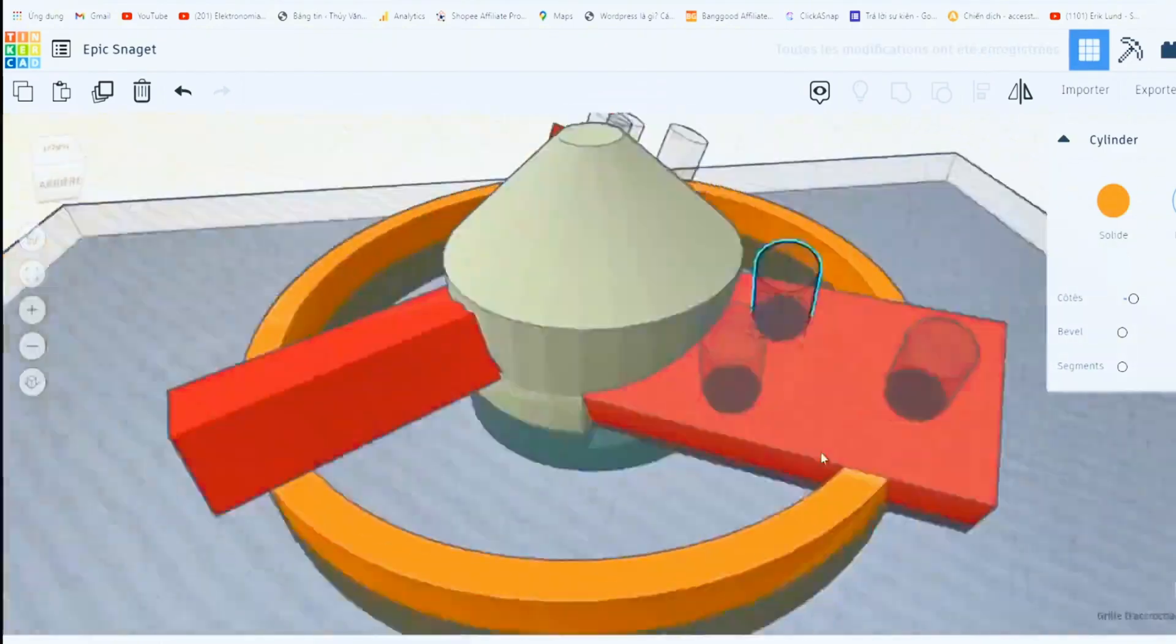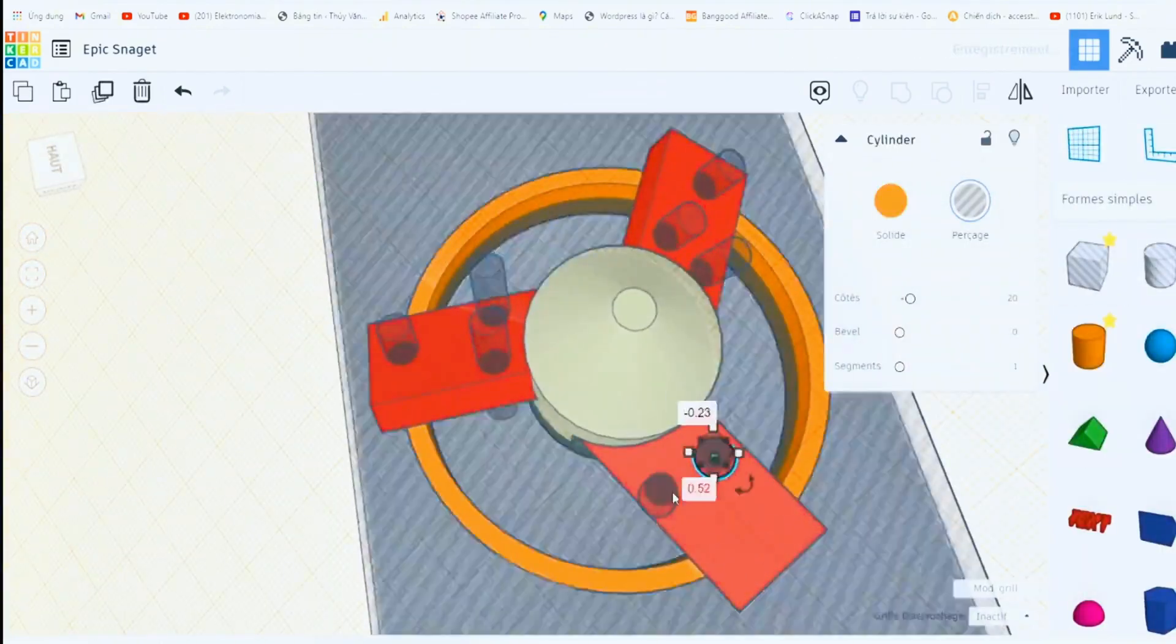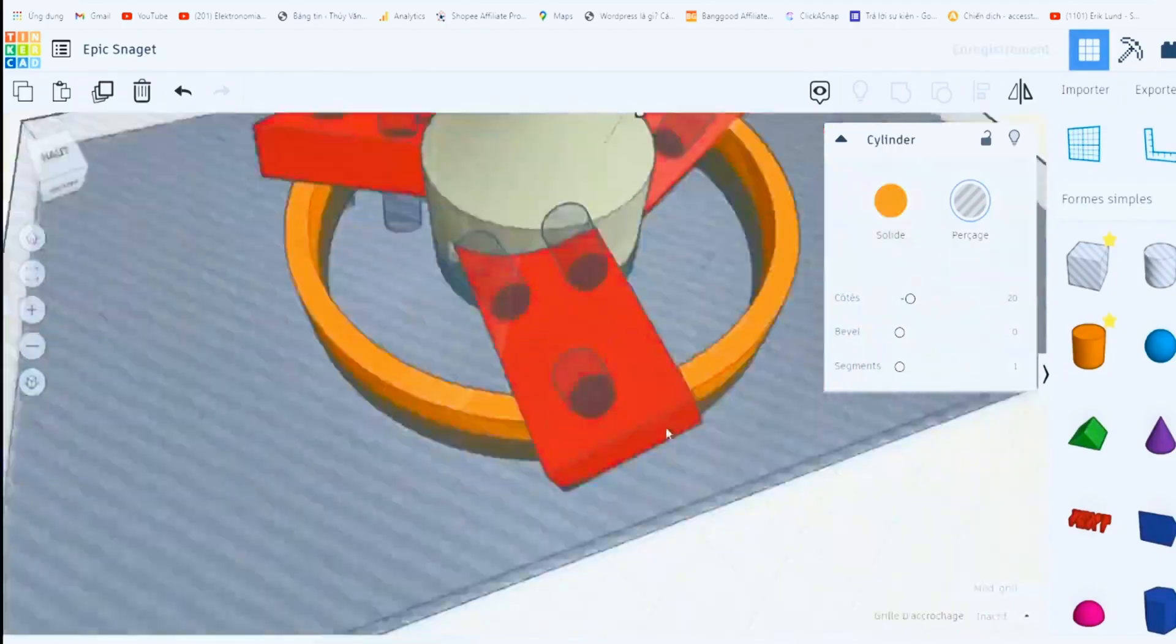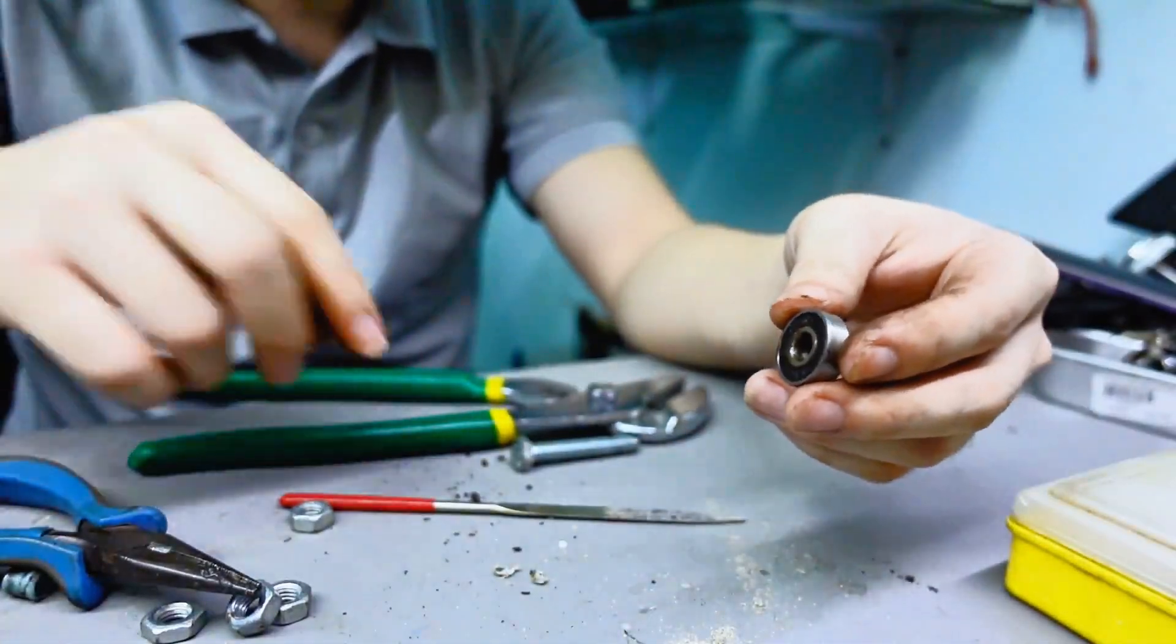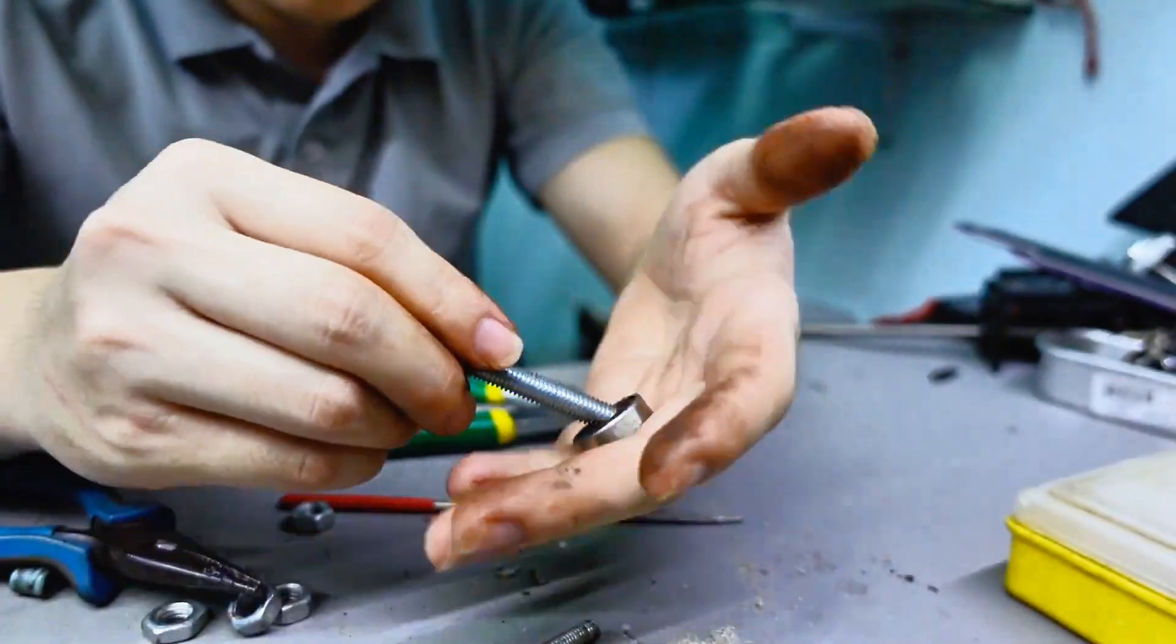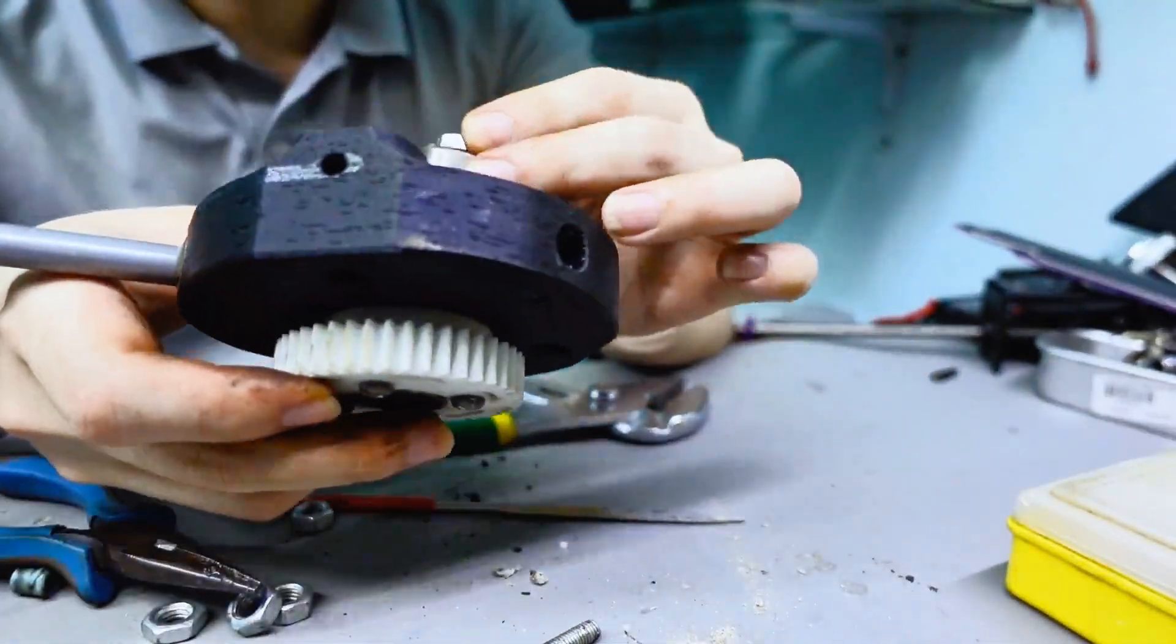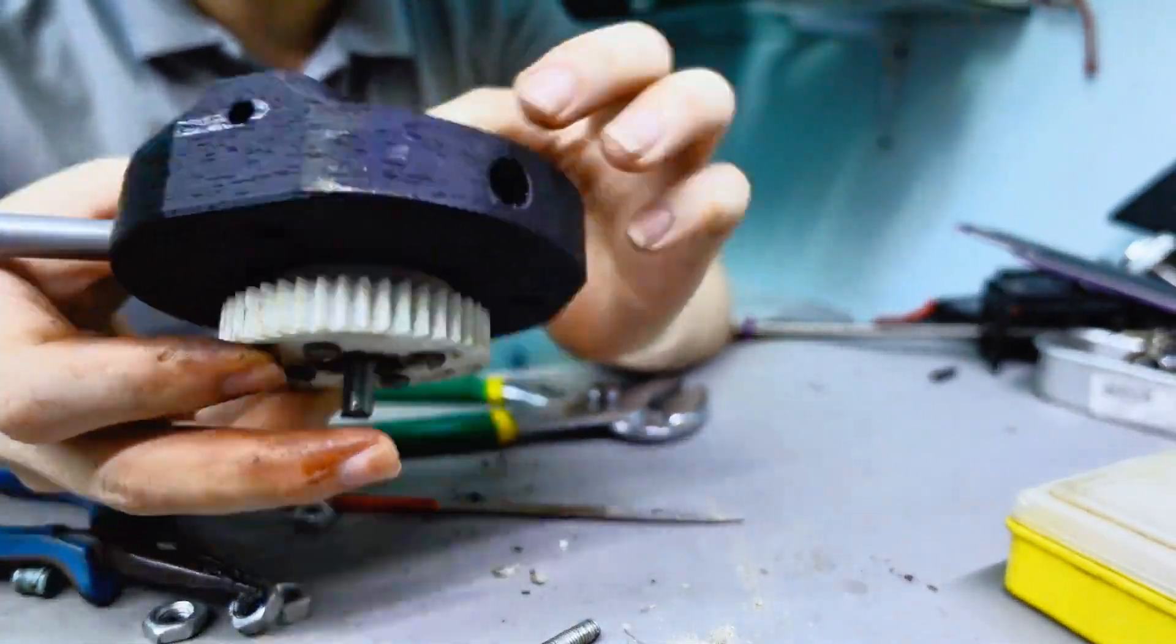Now we just need to adjust these cylindrical shapes to make sure they're perfectly balanced, so that when we print it out, the final model will look exactly like this. Next, I'll move on to making the rotating shaft that allows the wind turbine to spin 360 degrees.